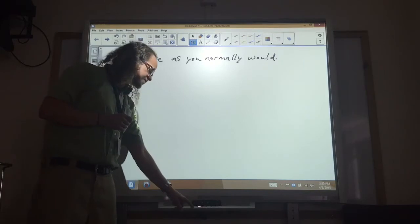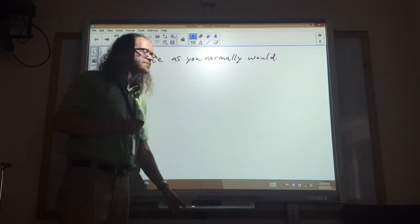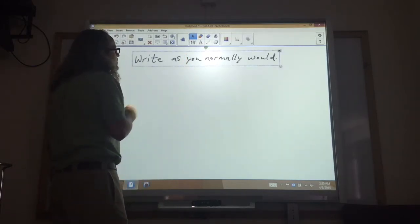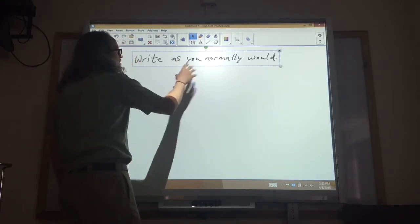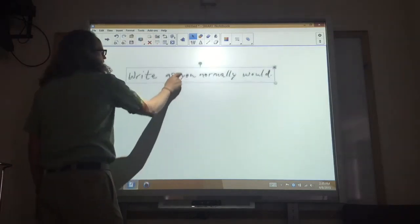If I go to my selector tool by hitting this button with the mouse arrow on it, I can now select this by just touching any part of it. A box has been placed around it, and I can see it's all one object. What can I do with that? Well, I can move it around.